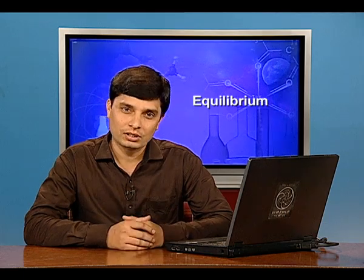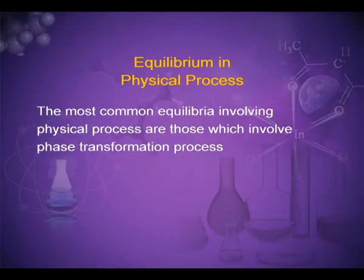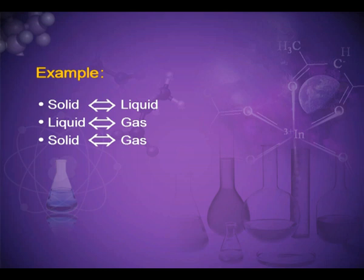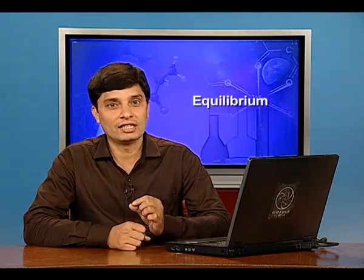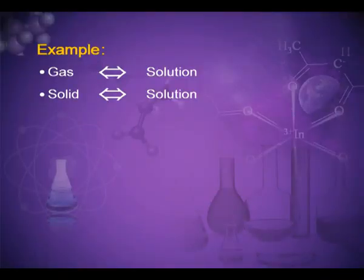Equilibrium in physical processes: the most common equilibrium involving physical processes are those involving phase transformation. For example, solid can transform into liquid and liquid into solid; liquid into gas and gas into liquid; solid into gas and gas into liquid. There are also equilibria involving dissolution of solids or gases in liquids — gas changing into solution and back, and solid changing into solution and back.